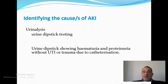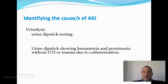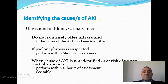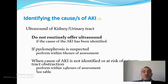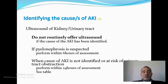Urine dipstick and microscopy can help identify the cause of kidney injury — for example, showing red cell casts without UTI or trauma suggests glomerular disease. Ultrasound is crucially important in AKI. It should not be routinely performed if the cause is already identified — for example, in a patient with severe dehydration. But if a renal process or obstruction is suspected, it should be performed within six hours as a semi-emergency. When the cause is not identified or obstruction is at risk, ultrasound can be performed within 24 hours, depending on local availability and guidelines.